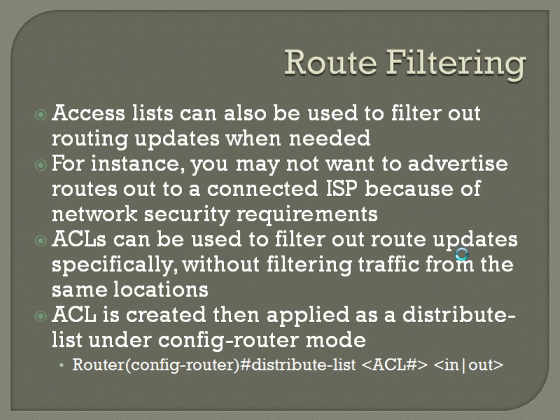Route filtering: access lists can also be used to filter out routing updates when needed. For instance, you may not want to advertise routes out to a connected ISP because of network security requirements. ACLs can filter out route updates specifically without filtering traffic from the same locations. To do this, you use a distribute list — the ACL is created and then applied as a distribute list under config-router mode, with the syntax: distribute-list, the ACL number, and then either in or out.